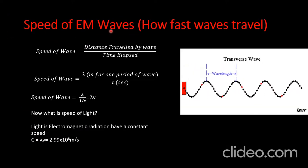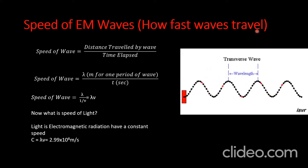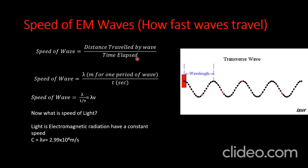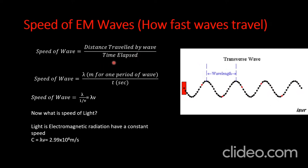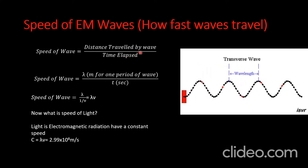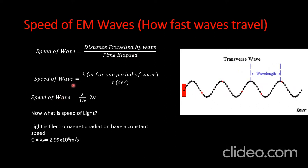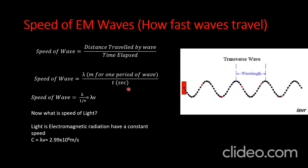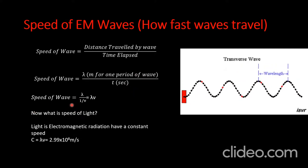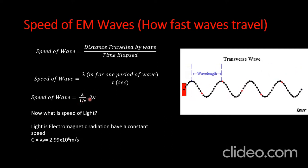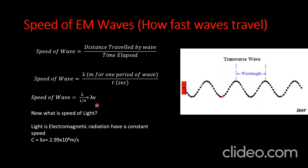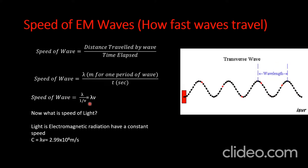The speed of electromagnetic waves describes how fast a wave travels. The speed of a wave is equal to the distance travelled by the wave divided by the time elapsed. For one period, the distance is one wavelength λ, and time T = 1/ν. So the speed of a wave equals λν.